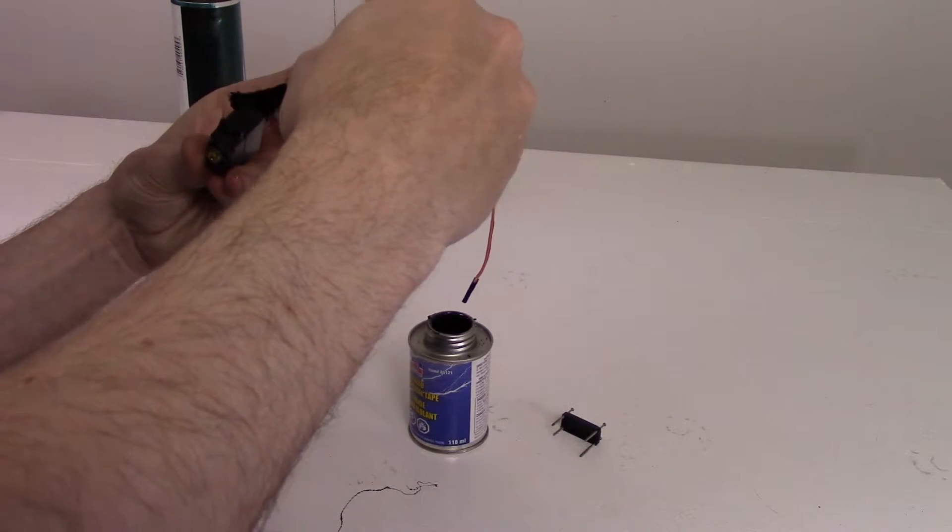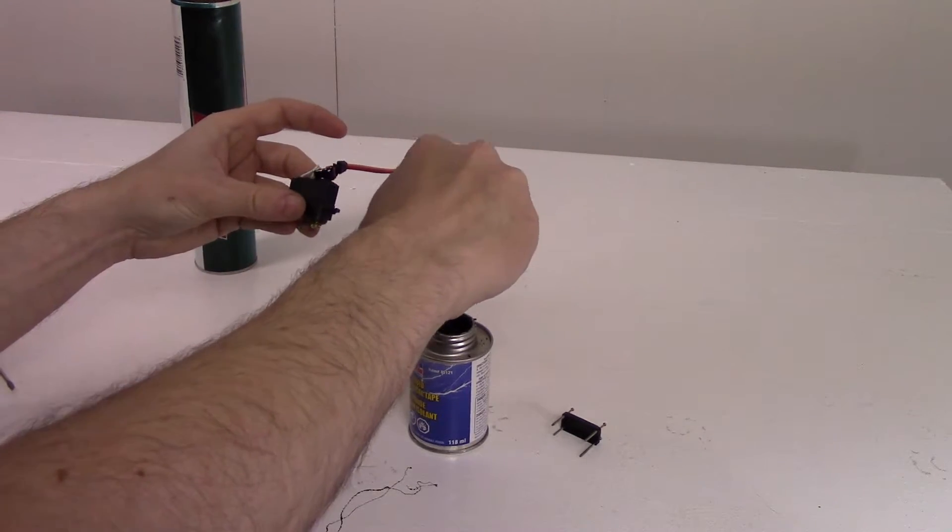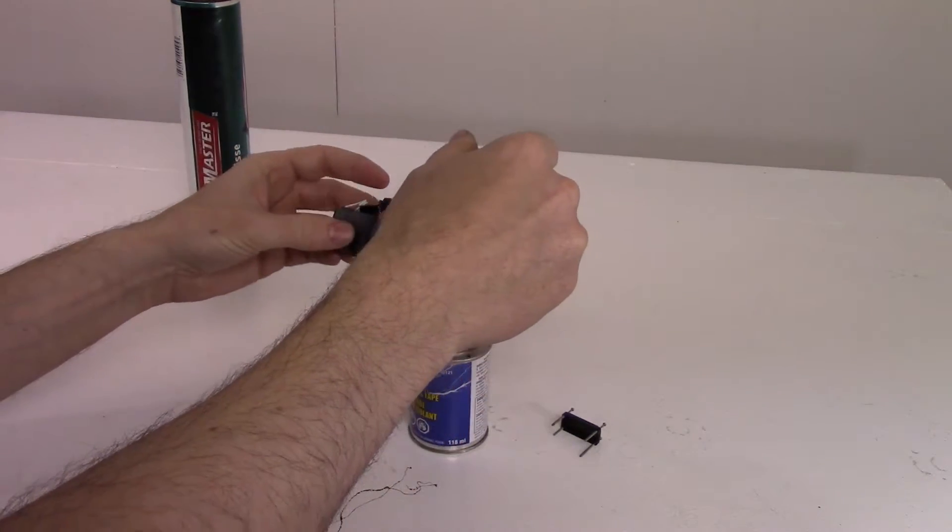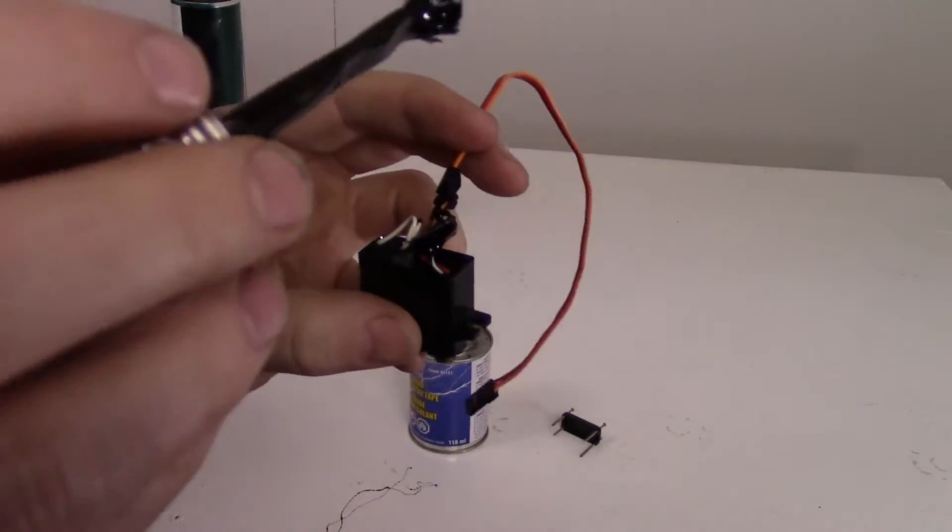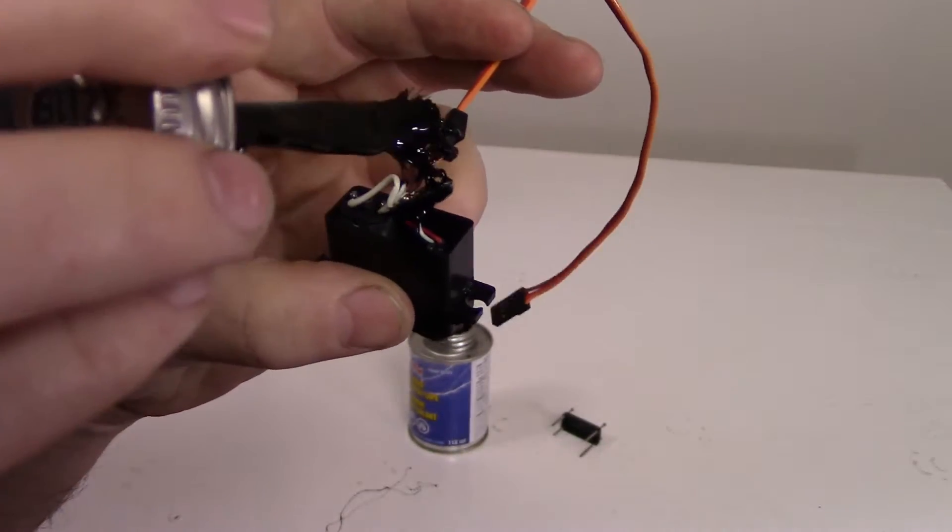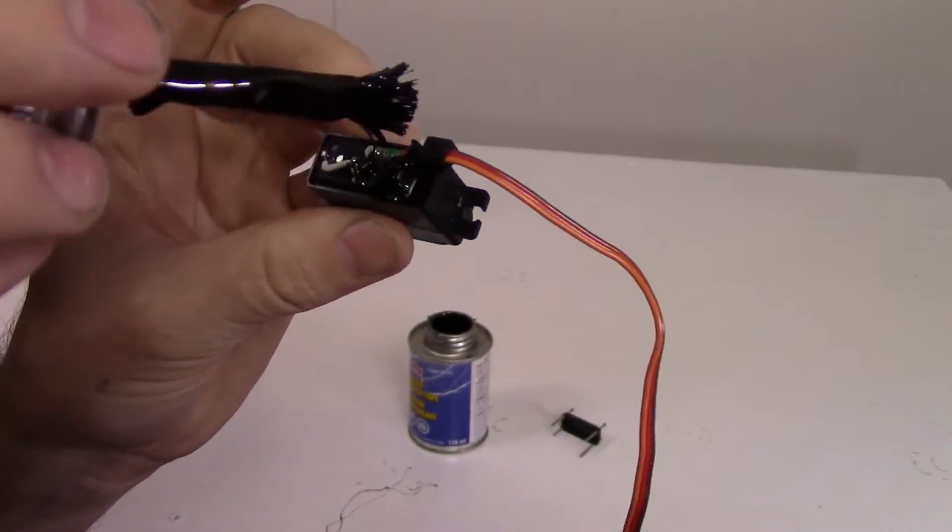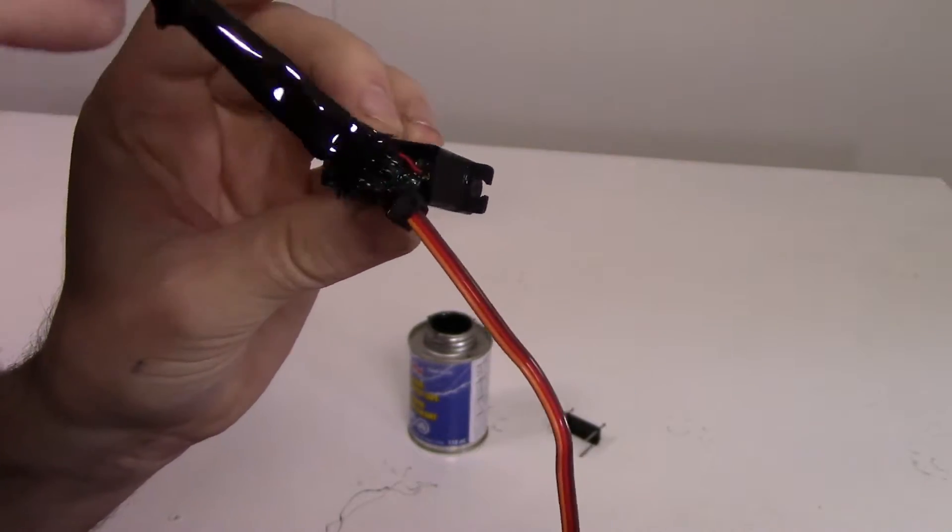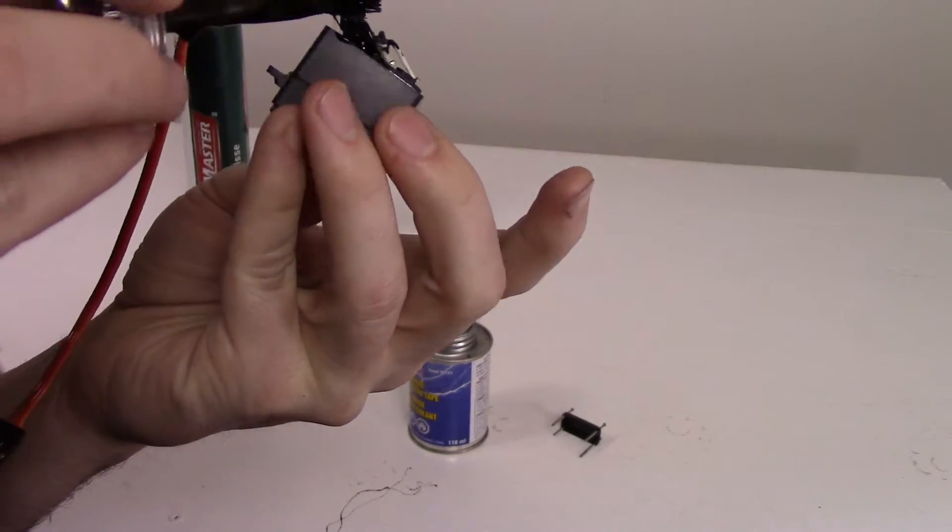It's going to be a little bit hard with these smaller servos to get everything properly 100% covered. You just got to take your time and really make sure you work the electrical tape into the little cracks and whatnot.